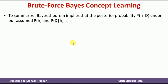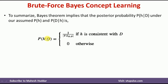Finally, given those three conditions, we can calculate the posterior probability using Bayes Theorem: P(H|D) equals 1 divided by the cardinality of the version space if H is consistent with D, and 0 if H is inconsistent with D. In this video, we have understood what is Bayes Theorem, what is Maximum A Posteriori Hypothesis, and what is Brute Force Bayes Concept Learning. I hope the concept is clear. If you like the video, do like and share. Press the subscribe button for more videos. Thank you for watching.